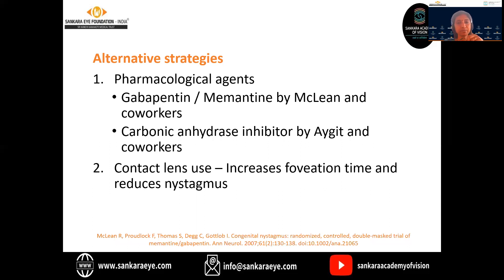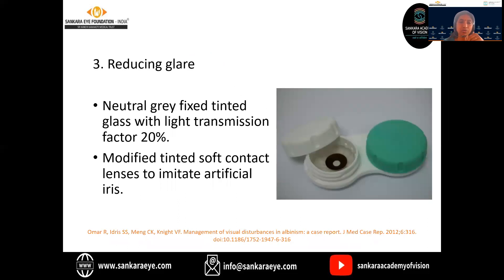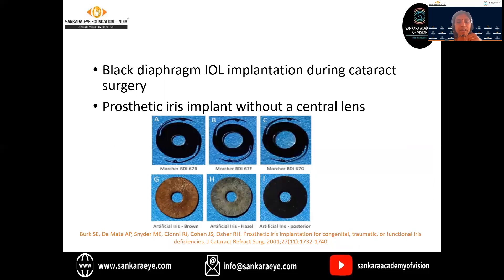Alternative strategies for nystagmus include pharmacological agents — GABA, memantine, and baclofen have been tried. Carbonic anhydrase inhibitors have also been tried. Contact lens use has been tried to increase foveation time and reduce the intensity of nystagmus. These children usually have glare and photophobia. To reduce the glare, neutral gray fixed tinted glasses with a light transmission factor of 20% will help. Modified tinted soft contact lenses to imitate an artificial iris can also be used. Black diaphragm intraocular lens implantation during cataract surgery and prosthetic iris implants without a central lens can also be used.